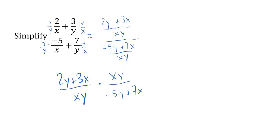xy divided by xy cancels out to 1. So our answer is 2y plus 3x over negative 5y plus 7x.